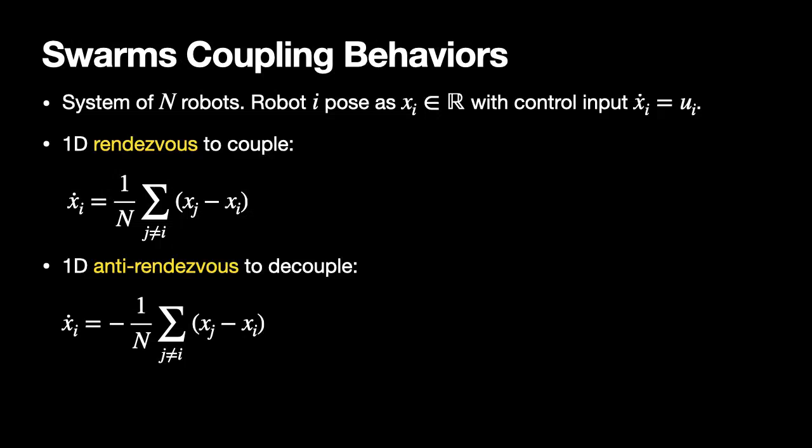The robot coupling behavior is done as 1D rendezvous, where each robot moves towards the centroid of the whole swarm. The decoupling behavior is also done as 1D rendezvous behavior, where each robot will move away from the centroid of the swarm.